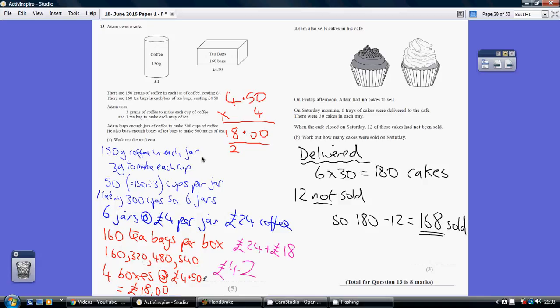Still haven't got enough for our 500, so we're going to have to buy 4 boxes. Even though that's giving us way too many, we're still going to have to buy 4 boxes. So, 4 boxes at £4.50 each is £18. So, £24 for the coffee, £18 for the tea bags, that's £42 in total.